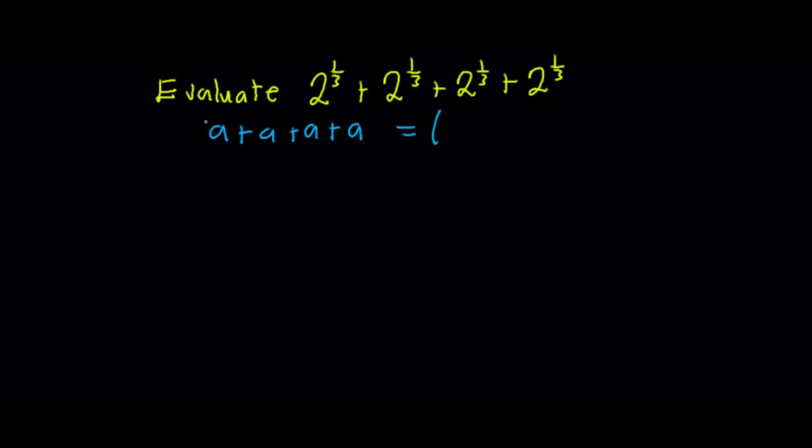Remember, the coefficient of a is 1. So this is 1 plus 1 plus 1 plus 1. Then I'll just multiply it by one of the a. So this gives me 4a.